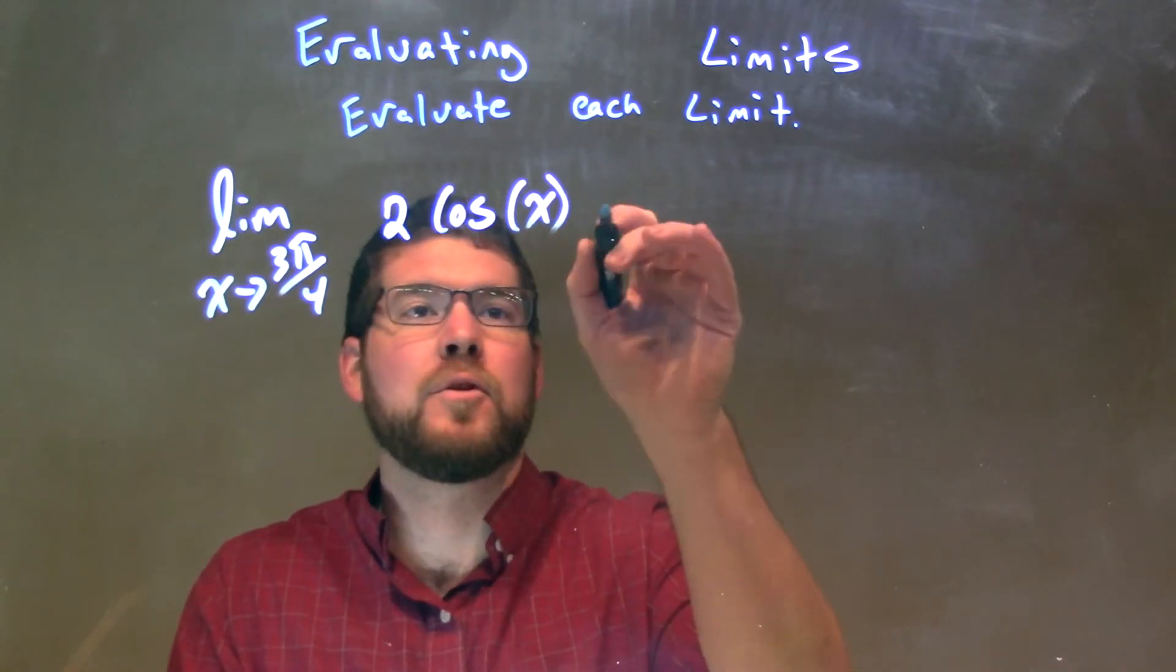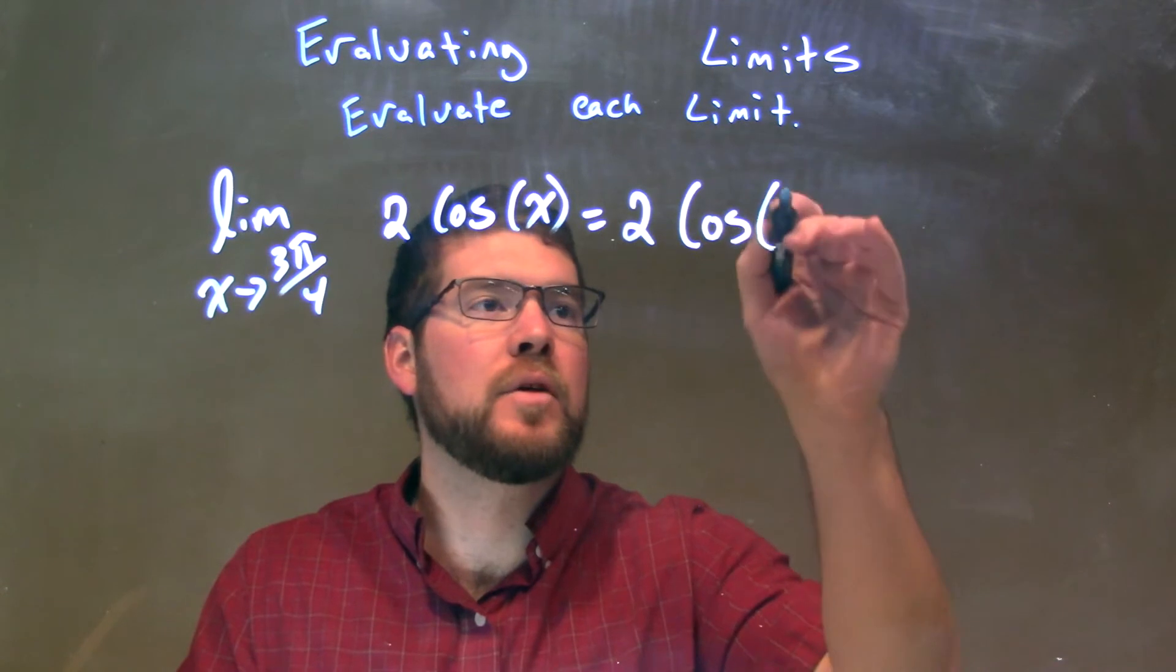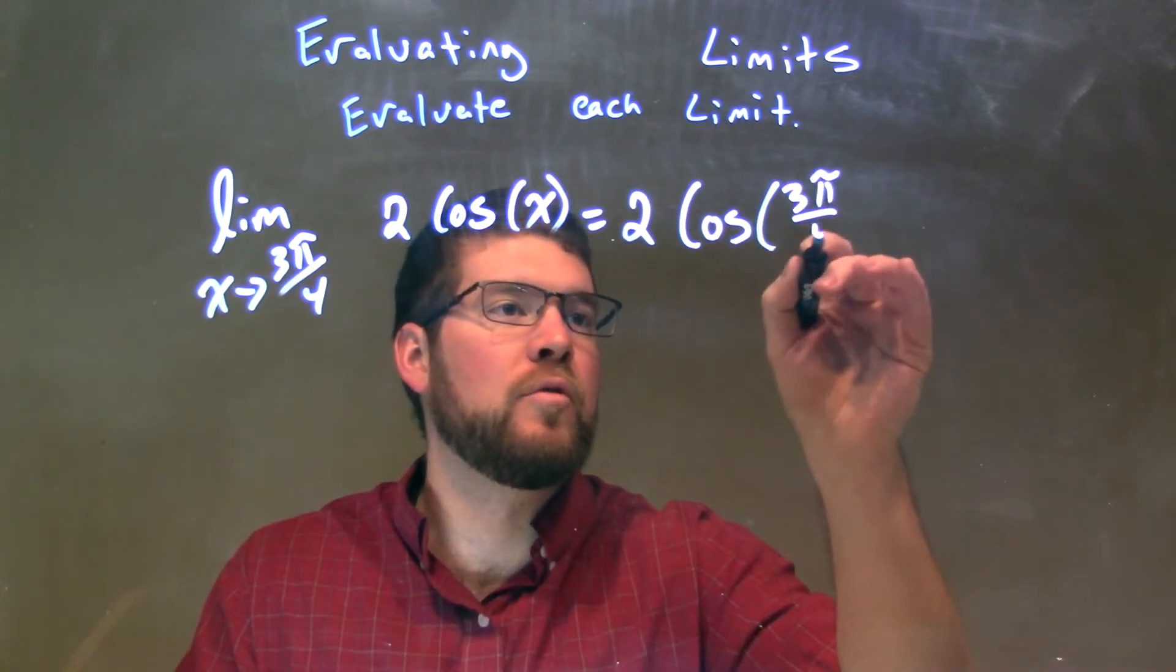So we're going to plug 3π/4 directly into x. So we have 2 now times the cosine of 3π/4.